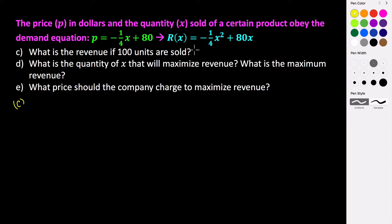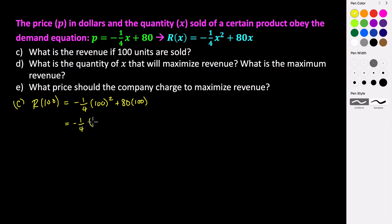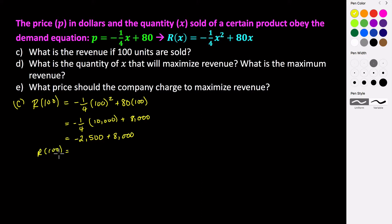We can plug in 100 — this is basically just saying what is R of 100. So the revenue at 100 items sold is negative one-fourth times 100 squared plus 80 times 100. 100 squared is 10,000. So 10,000 plus 80 times 100 is 8,000. 10,000 divided by 4 is 2,500. So it's negative 2,500 plus 8,000, and that sum is R of 100.